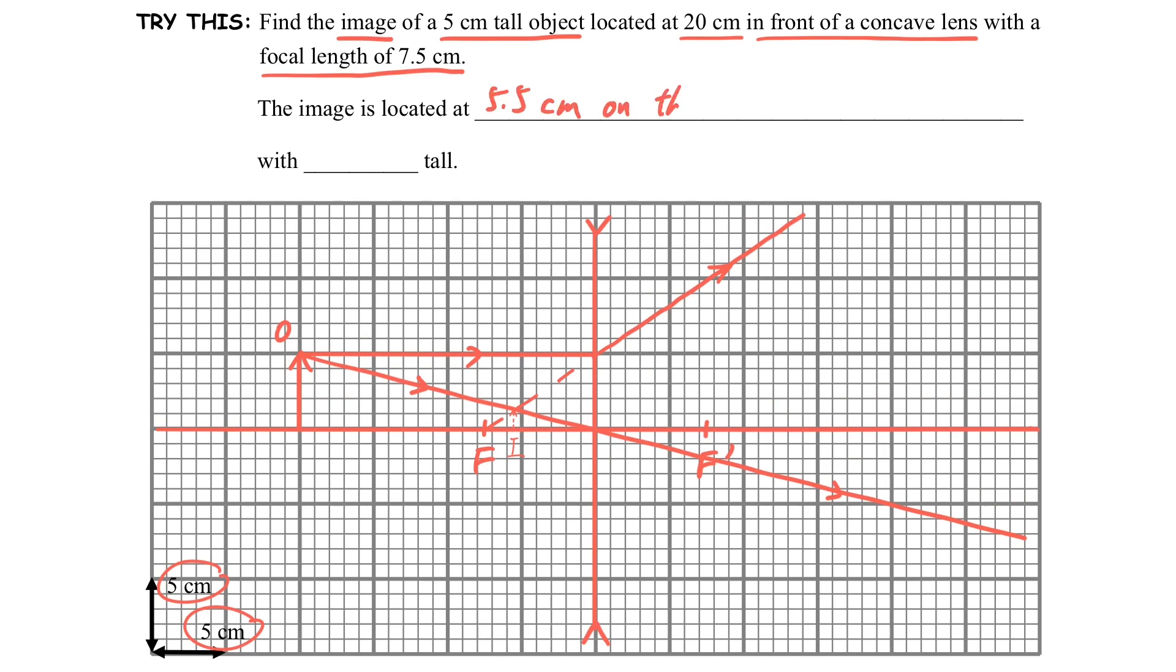How do we describe the position? We will describe in this way. It is 5.5 cm on the same side of object. Usually we won't say left or right, but use the same side or opposite side.